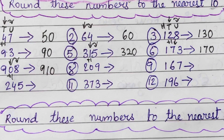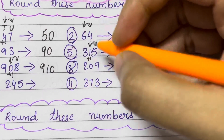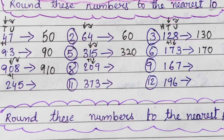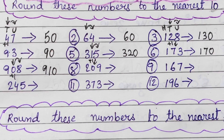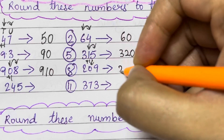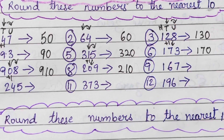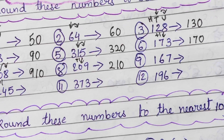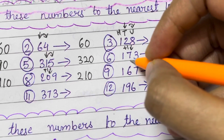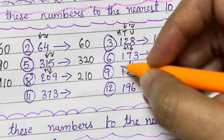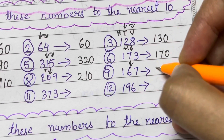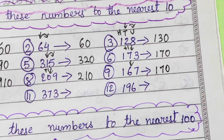209. The tens place is again 0, but the digit after that is more than 5. So you add plus 1. Your answer becomes 210. Next, 167 — tens place is 6. The digit after that is more than 5, so it has been added with 1. So 170.